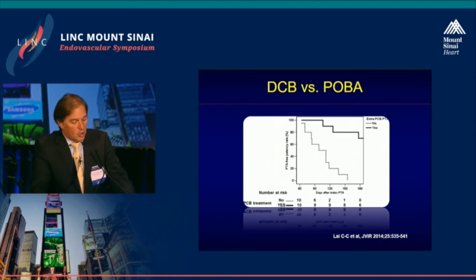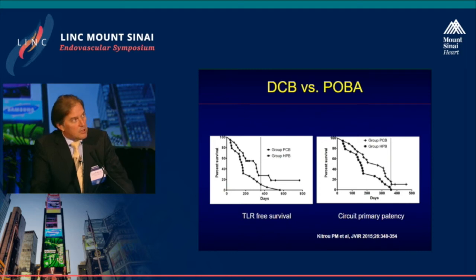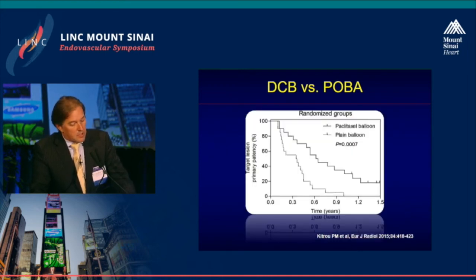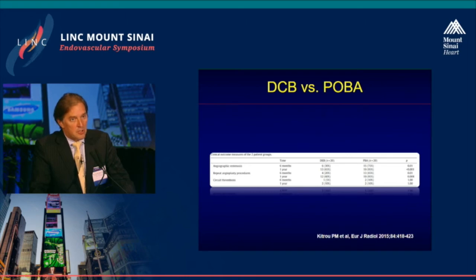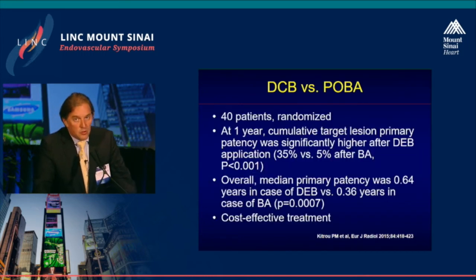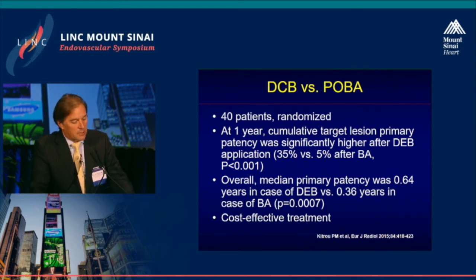Regarding the results of DCB versus POBA: there are several studies, the first coming out in 2014, showing a benefit of drug-coated balloons compared to POBA. A second study from 2015 showed a benefit with regards to TLR freedom and circuit primary patency. Another publication from the same group showed a benefit of paclitaxel-coated balloons versus plain balloon angioplasty, specifically in the occurrence of angiographic restenosis — significantly lower — and also in repeat angioplasty procedures. Circuit thrombosis was not really different, but the main gain from drug-coated balloons is in reducing repeat angioplasty procedures.